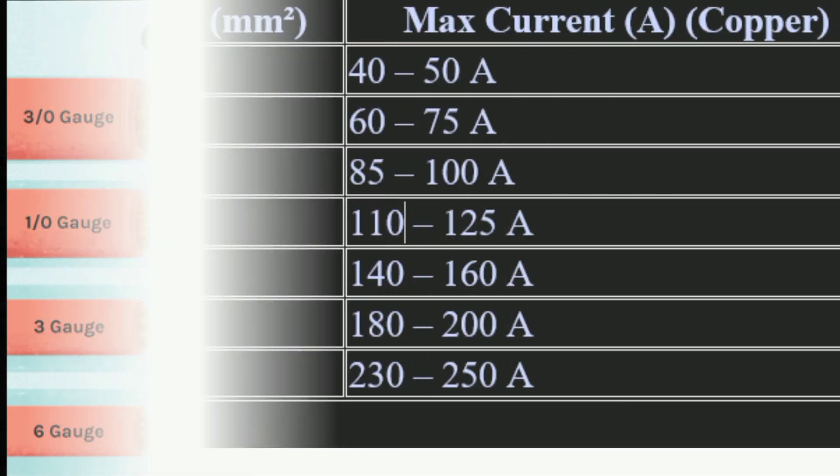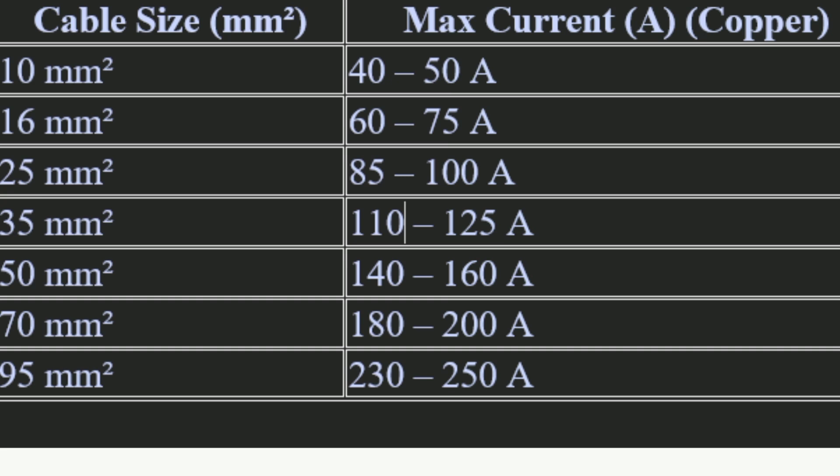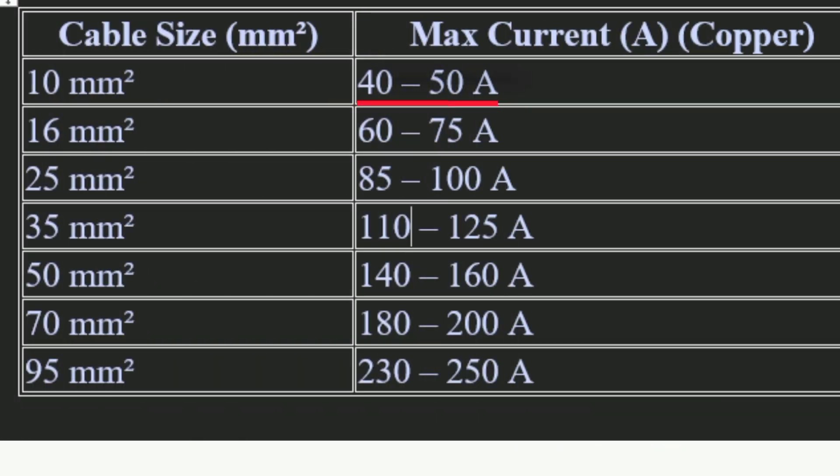Looking at the table, we have cable size and maximum current rating. The 10mm² cable has a rating of 40 to 50 amps. However, if a 10mm² cable is not high quality it may not carry up to 50 amps, while a high-quality 10mm² cable can. So you must choose quality cables, and other factors like ambient temperature may also apply.